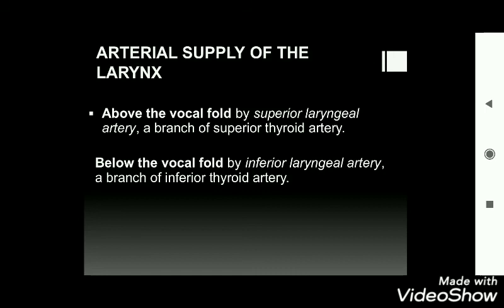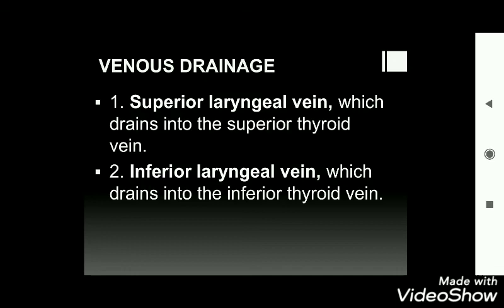Arterial supply: above the vocal cords it is supplied by the superior laryngeal artery, a branch of the superior thyroid artery. Below the vocal folds it is supplied by the inferior laryngeal artery, a branch of the inferior thyroid artery. Venous drainage: the superior laryngeal vein drains into the superior thyroid vein, and the inferior laryngeal vein drains into the inferior thyroid vein.